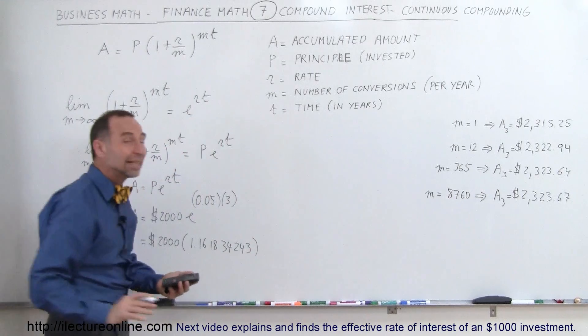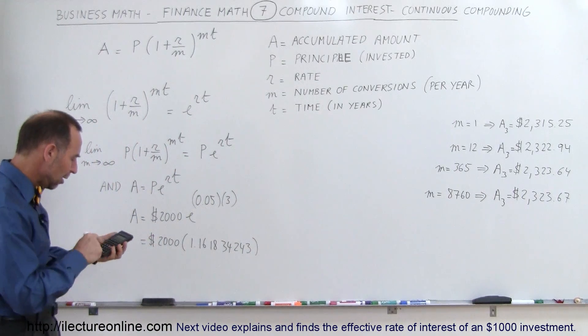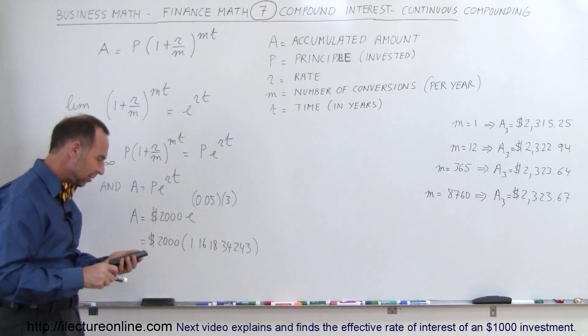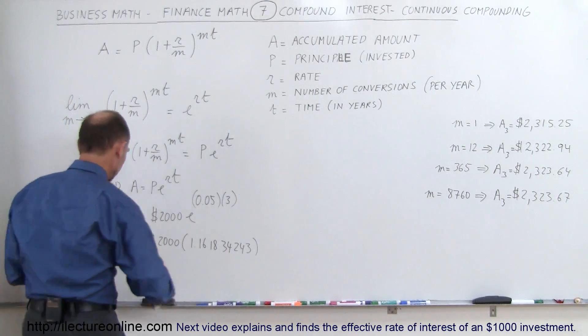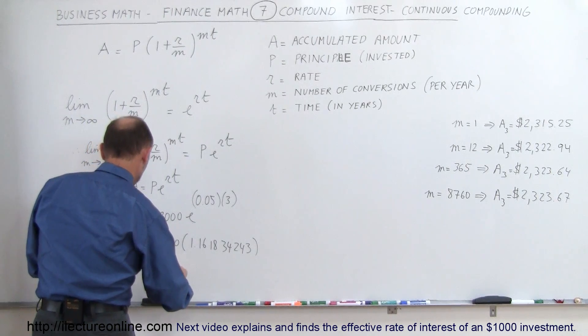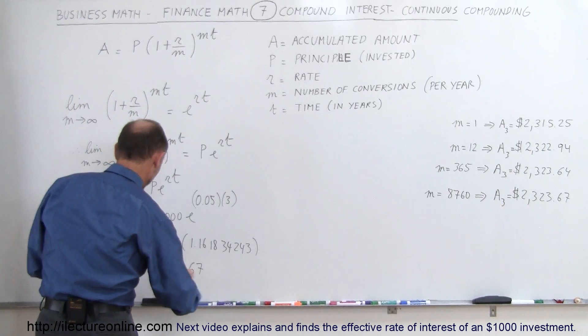Again, you don't need that many numbers there, but just so you can compare it to what you got on your calculator. Multiply that times 2,000, and you get the accumulated amount to be $2,323.67.